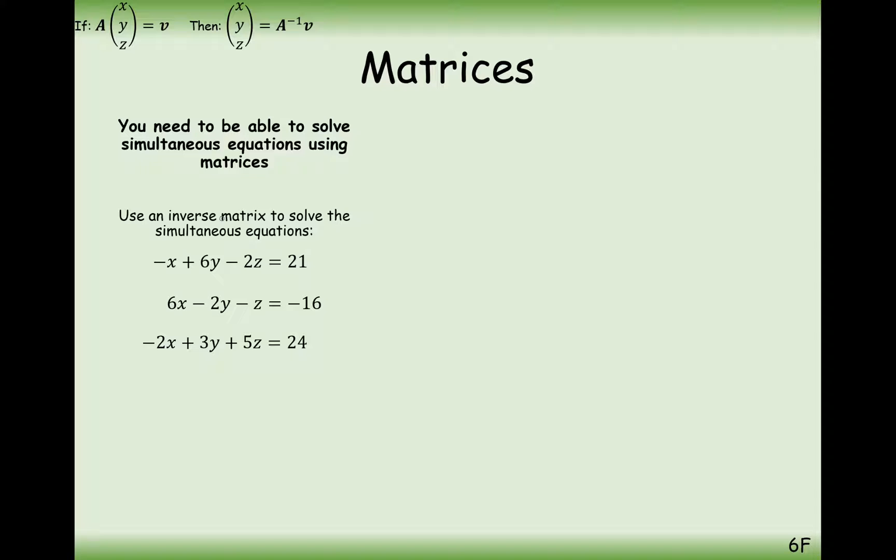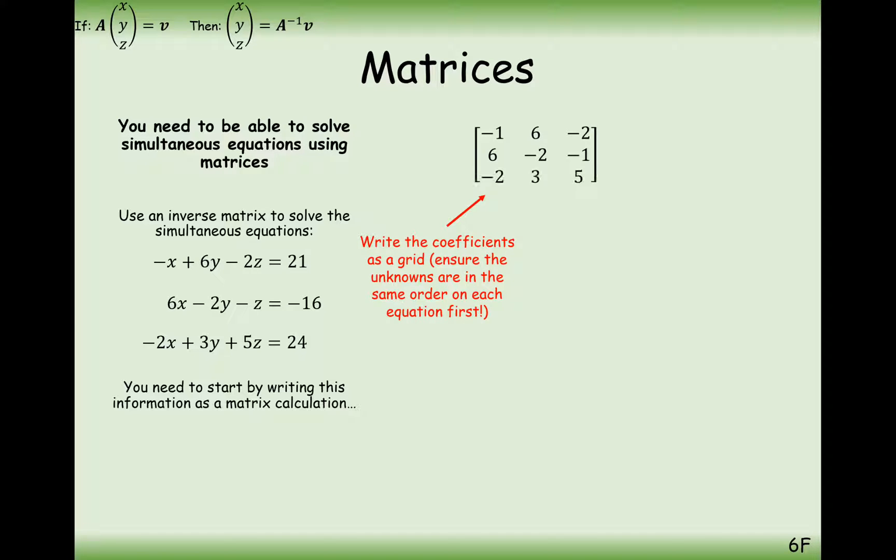The question here is this. We have three equations: minus x plus 6y minus 2z equals 21, we have 6x minus 2y minus z equals minus 16, and a third equation of minus 2x plus 3y plus 5z equals 24. So these are our three equations. What we want to do is find out the values of x, y, and z given, and that will satisfy all of these three equations.